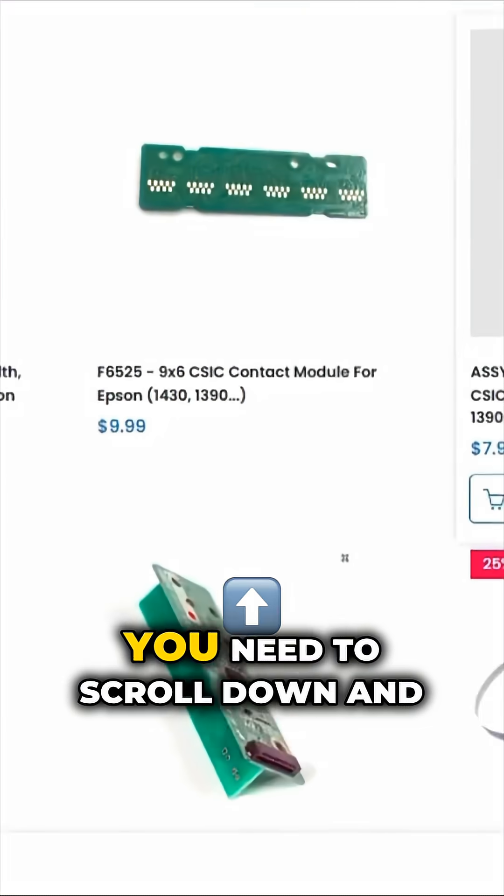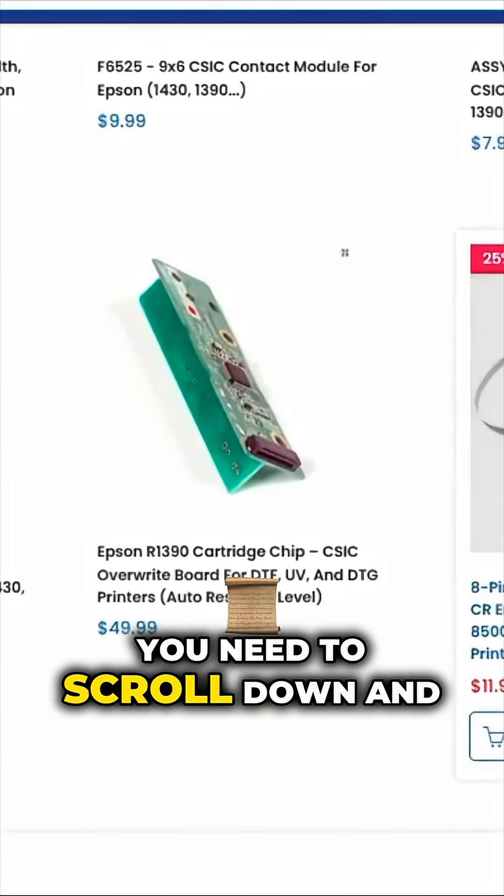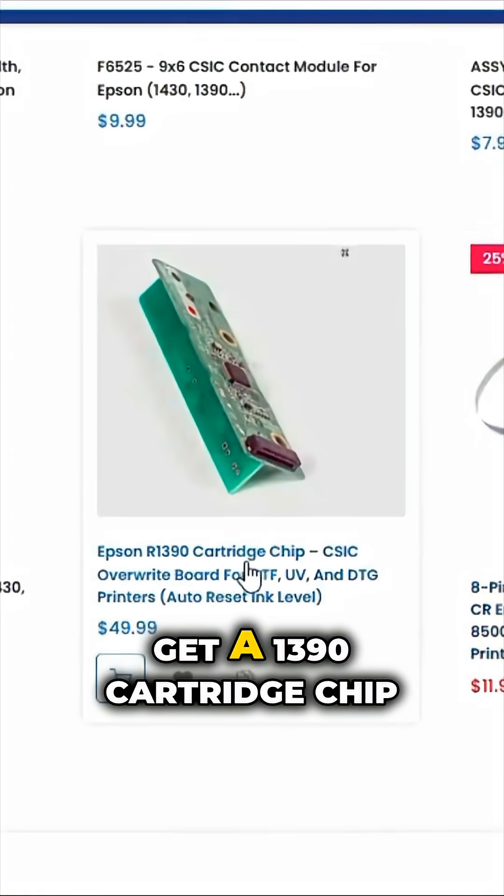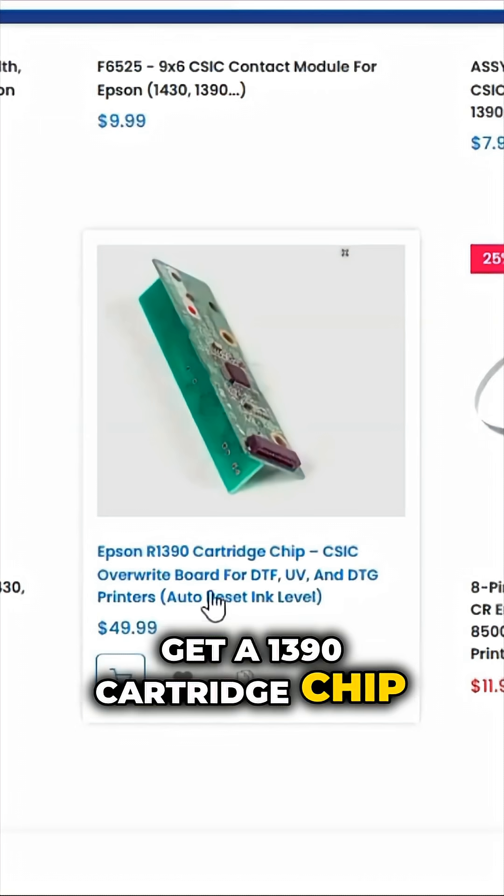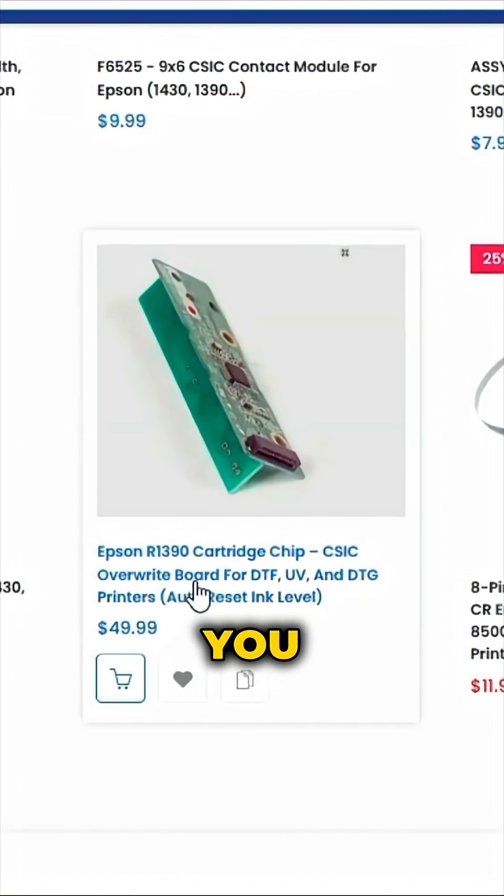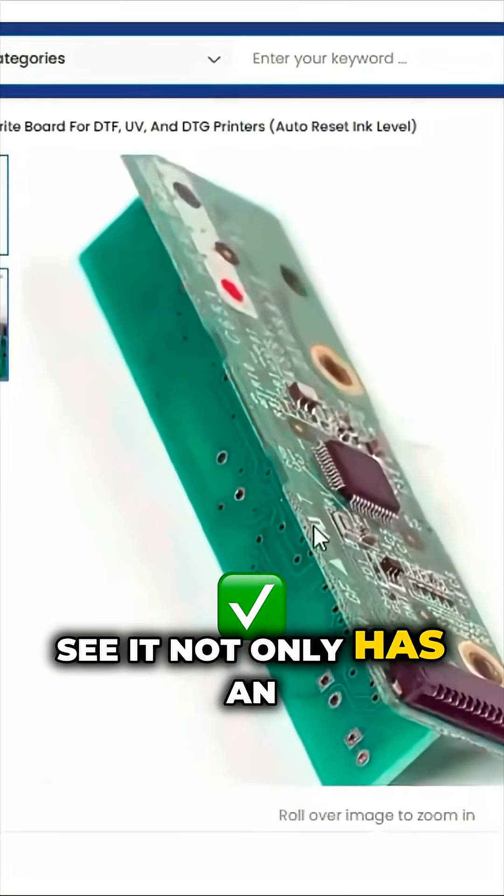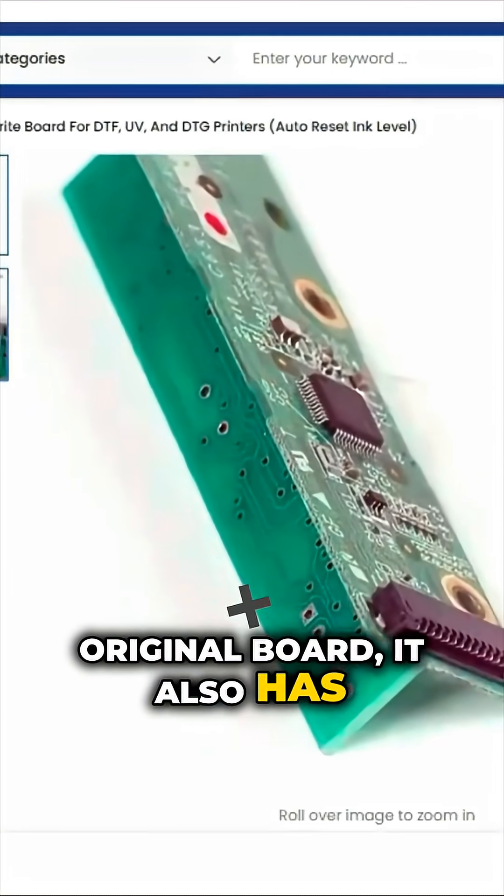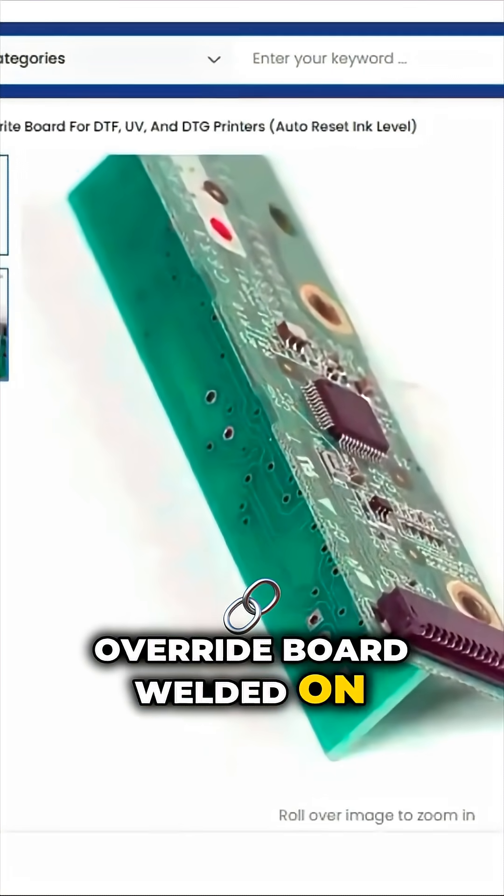It doesn't have the overwrite, so you need to scroll down and get a 1390 cartridge chip CSIC overwrite board. You can see not only does it have an original board, it also has an overwrite board welded on it.